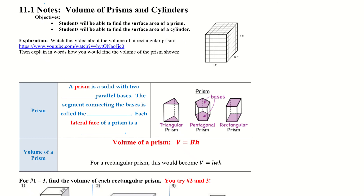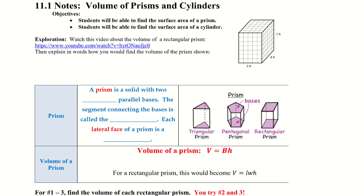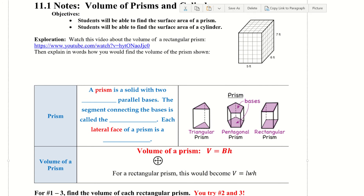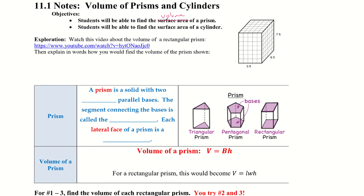Good morning, we are starting chapter 11, our last chapter before we start preparing for finals. Section 11.1 is on volumes of prisms and cylinders. Our objective is that students will be able to find the volume of a prism and students will be able to find the volume of a cylinder.